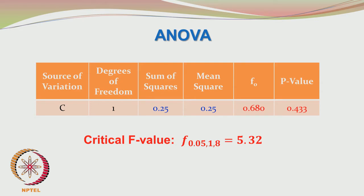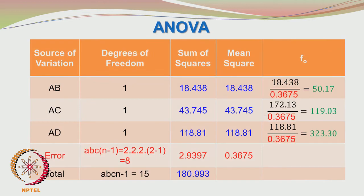Since this probability is quite high, we cannot reject the null hypothesis which says that factor C is insignificant. We can also calculate the P values for factors A, B, C, and so on. But let us first complete the ANOVA table for the interactions. We have the binary interactions. We do not have all binary interactions — 4C2 would be 6 binary interactions but we are showing only 3 because the other 3 are aliased with these 3.